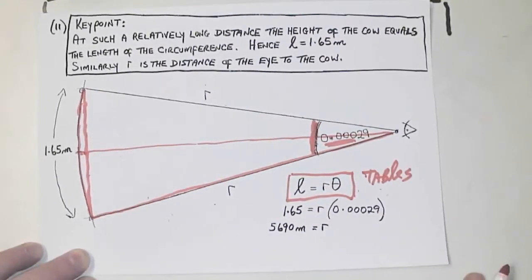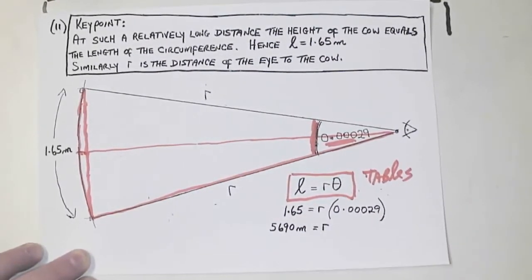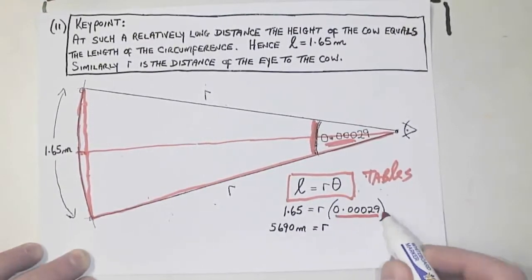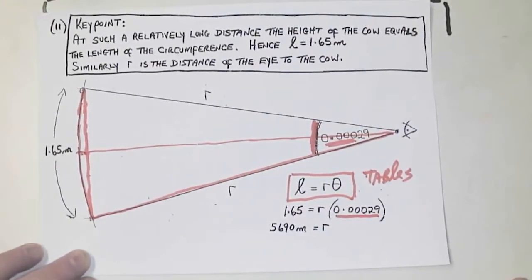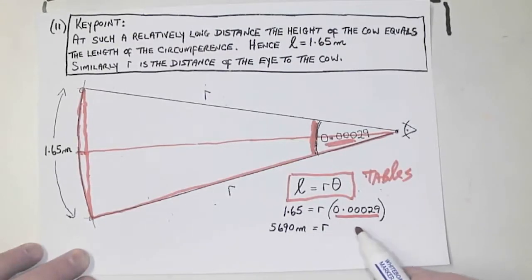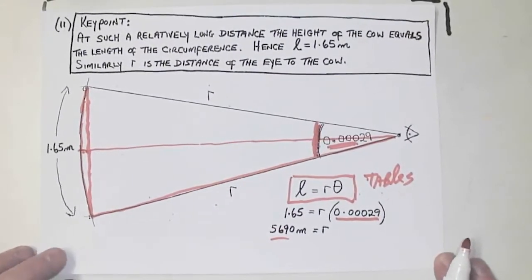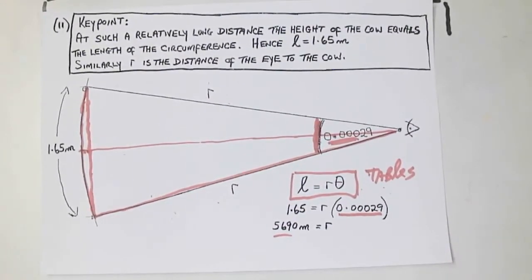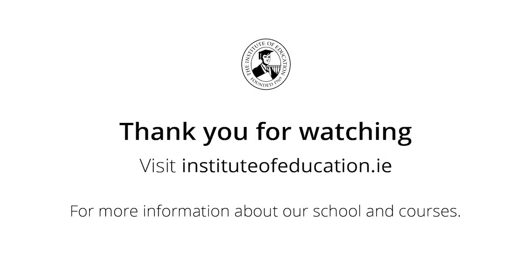The circumference of a circle is R times theta. So 1.65 is equal to R times theta, where theta is in radians, 0.00029. And if you divide both sides by 0.00029, you get 5690 meters. So anything close to 5690 meters would get the marks.